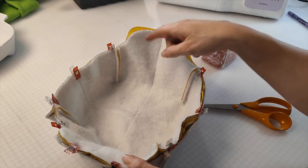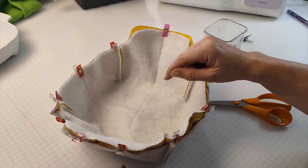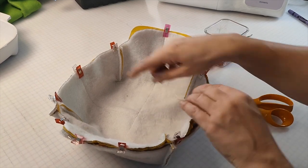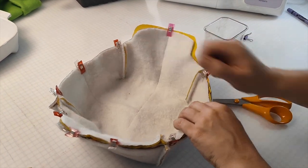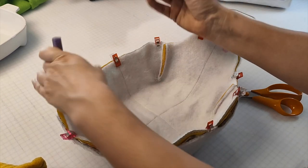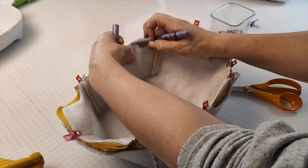Now we're going to sew all the way around the edge leaving a one quarter inch seam allowance making sure that one of the sides we leave open. To remind myself where that's going to be I'm going to leave a mark on one side.